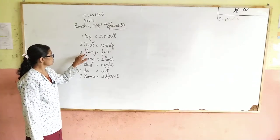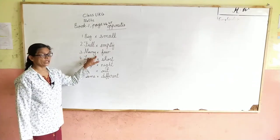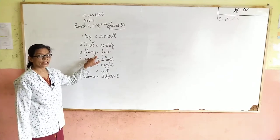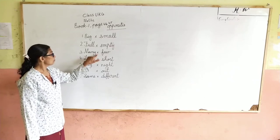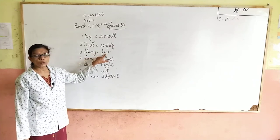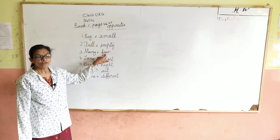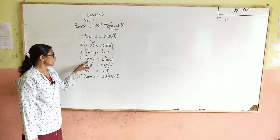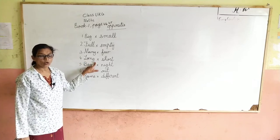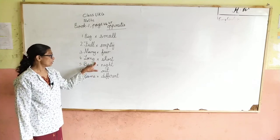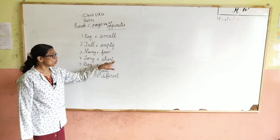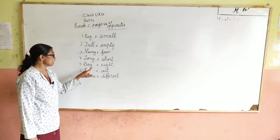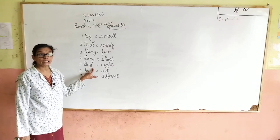Next. M-A-N-Y, many. Many — go opposite. F-E-W, few. Few means a little. L-O-N-G, long. Long means lamba. S-H-O-R-T, short. Short means chota.